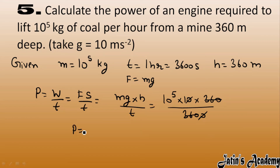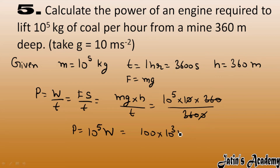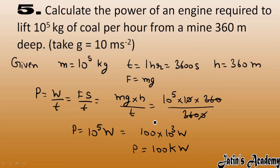We can also convert this into kilowatts: 10⁵ watts = 100 × 10³ watts = 100 kilowatts. Since 10³ watts equals one kilowatt, the final answer is 100 kilowatts.